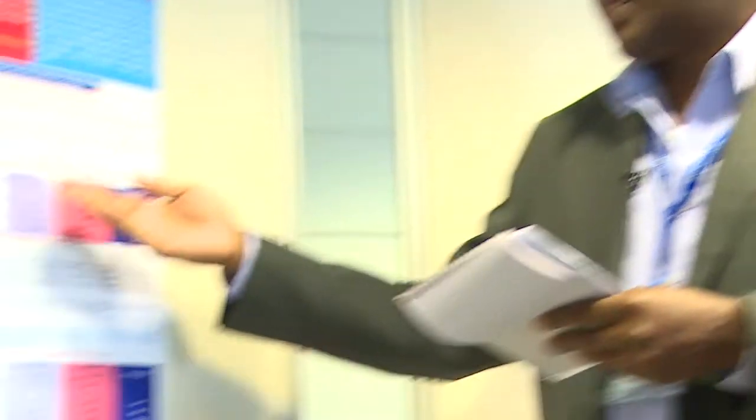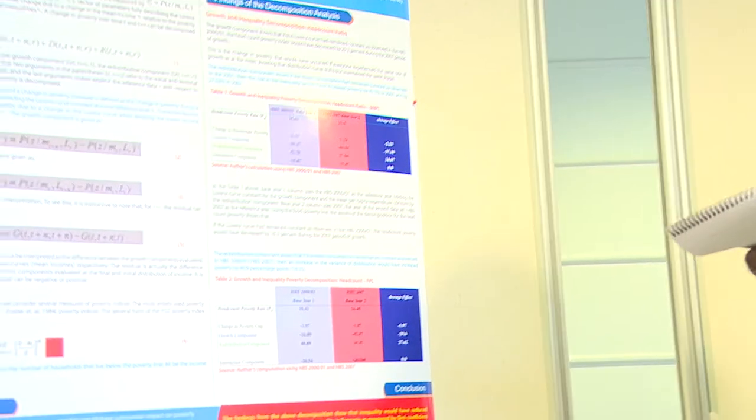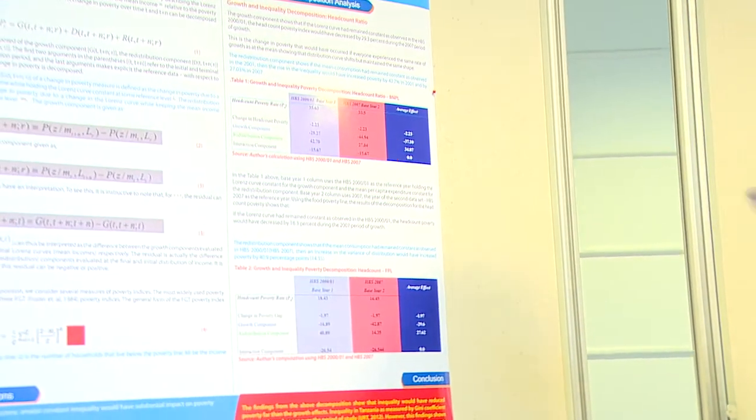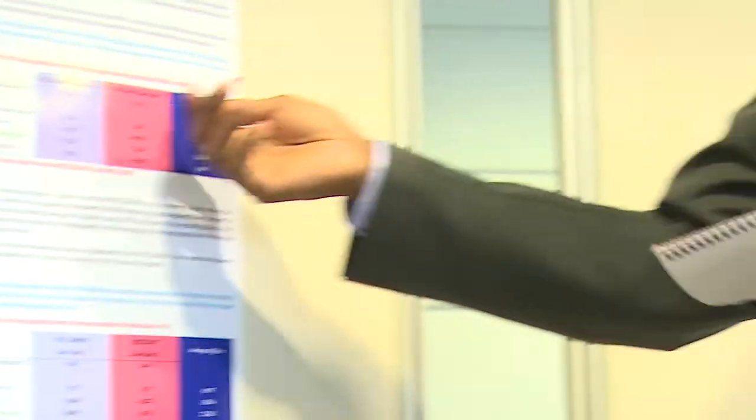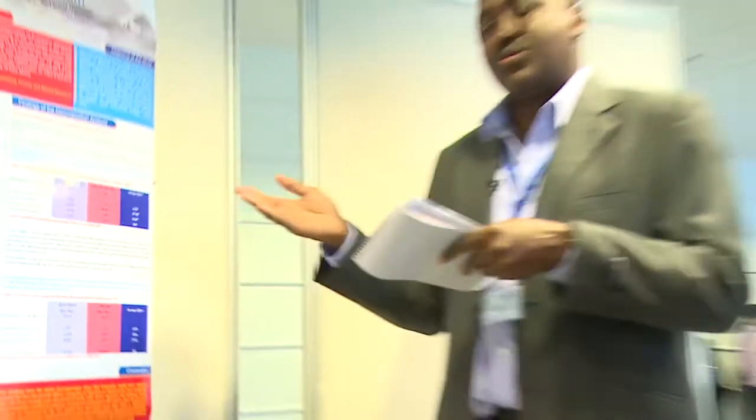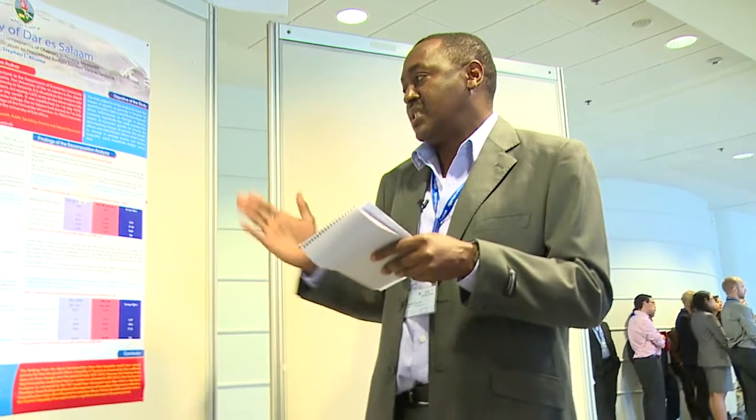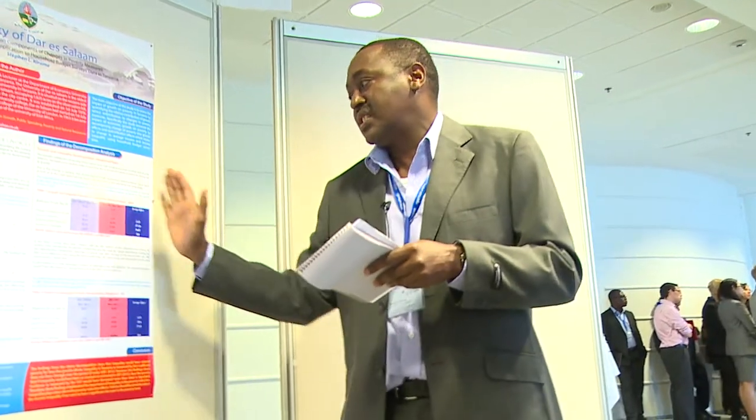The decomposition analysis uses two datasets: the first is the Household Budget Survey (HBS) undertaken in 2000-2001, and the second was undertaken in 2007. We decompose the change in poverty across these two data sets.